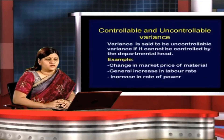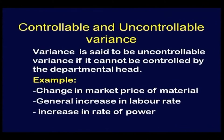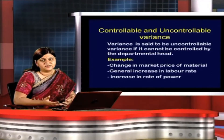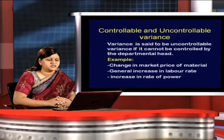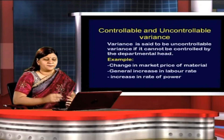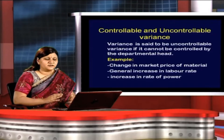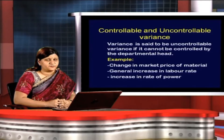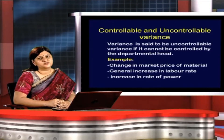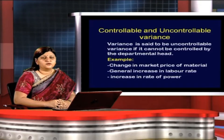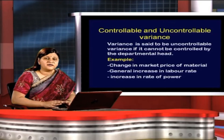Uncontrollable variances are those that cannot be controlled by the department head. Examples include changing market prices of material — if the market price changes, management has no role to play; the material must be purchased at that price. Similarly, a general increase in labor rates across the industry, or an increase in the rate of power, are uncontrollable factors. Under uncontrollable variance, no person or department head can be held responsible for the occurrence of such variance.